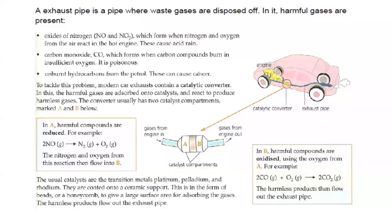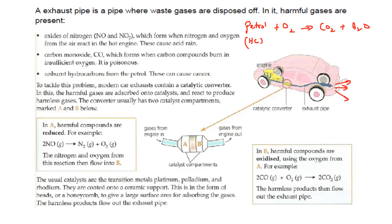Petrol is used as a fuel inside the car. Petrol is a hydrocarbon, meaning it contains hydrogen and carbon. When we burn petrol, complete combustion of a hydrocarbon in the presence of oxygen produces carbon dioxide and water vapors. That carbon dioxide and water vapor are released from the exhaust pipe.